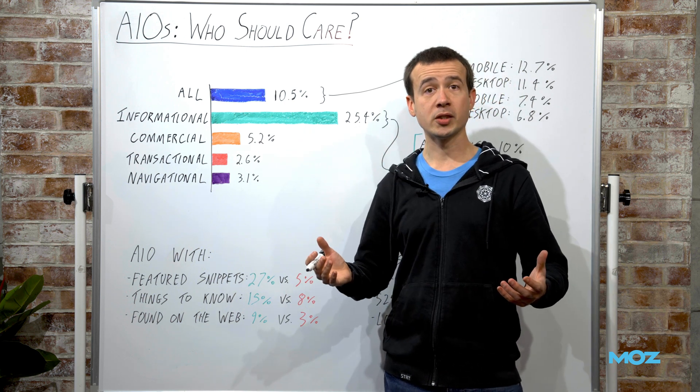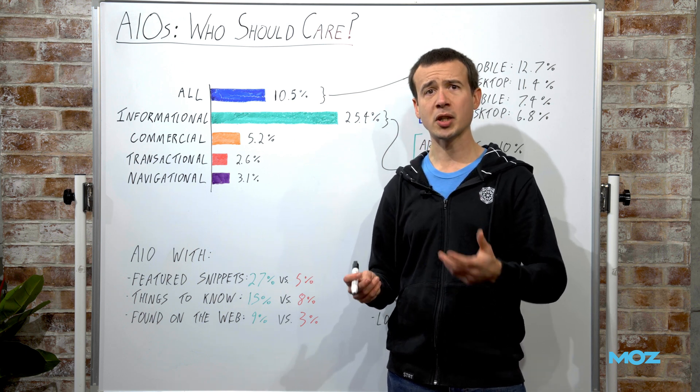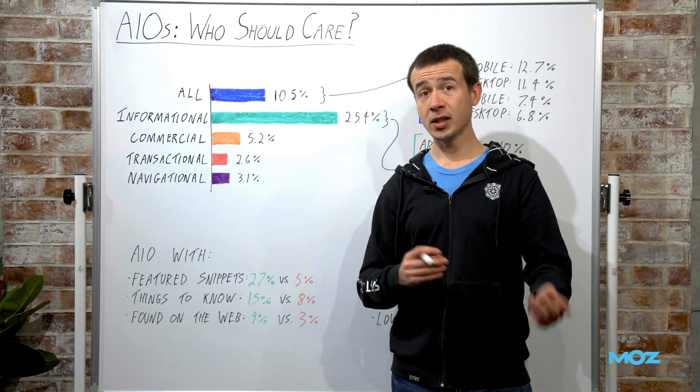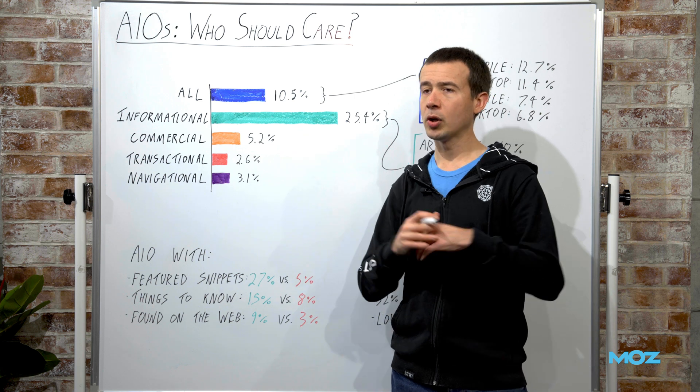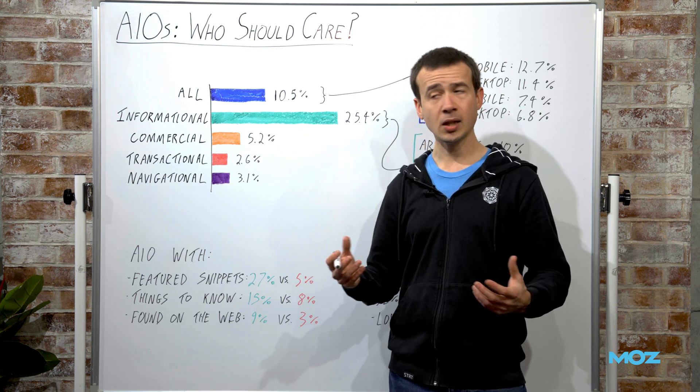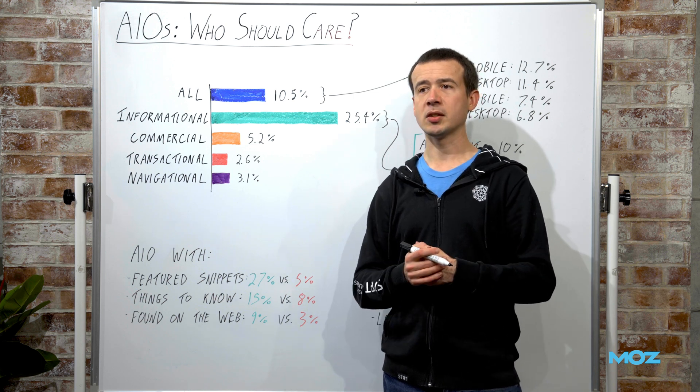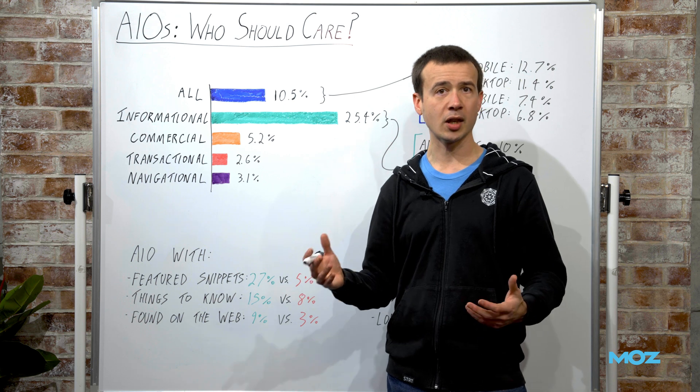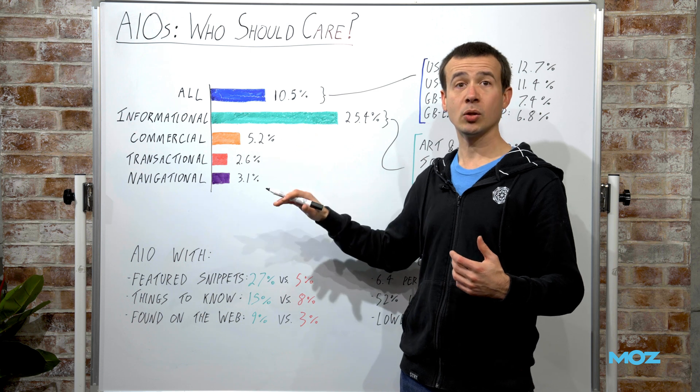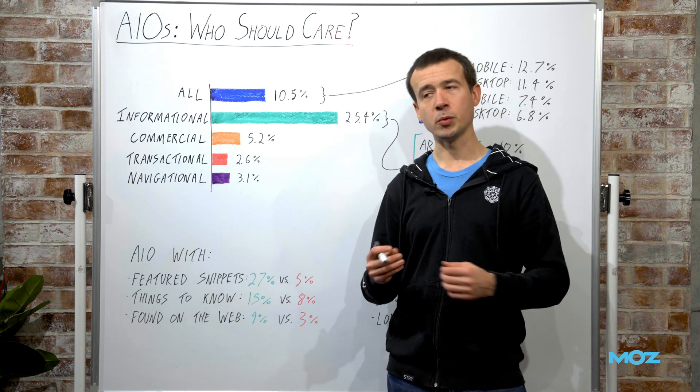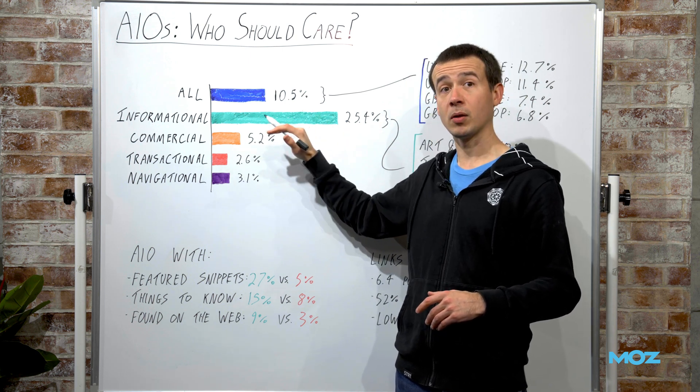This is similar to what we might have seen featured snippets performing in the past. This is quite significant for businesses because both for Google and for us as SEOs, these kind of keywords were generally less lucrative. I'm not saying that top of funnel isn't important, because it is, but you weren't necessarily always aiming for the click there. Certainly you weren't aiming for a click that went on to convert in the same session.